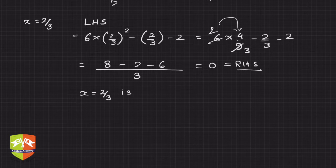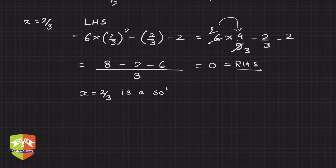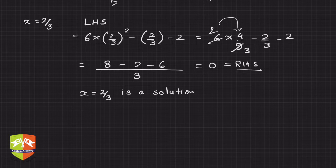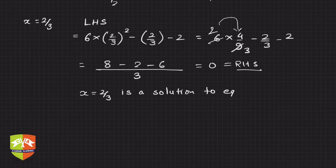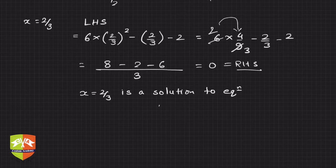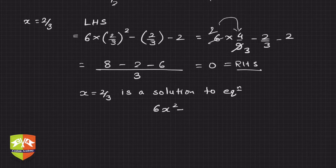That means x = 2/3 is a solution to the given equation 6x² - x - 2 = 0. So two solutions could be established.